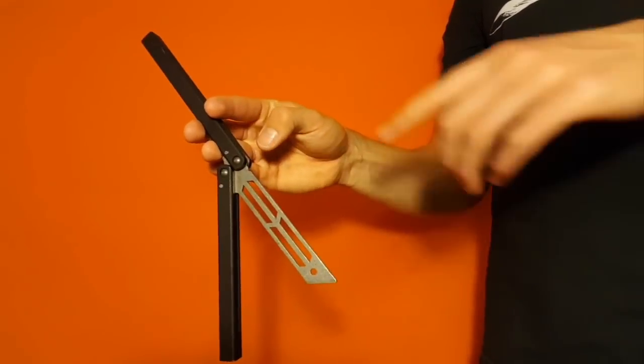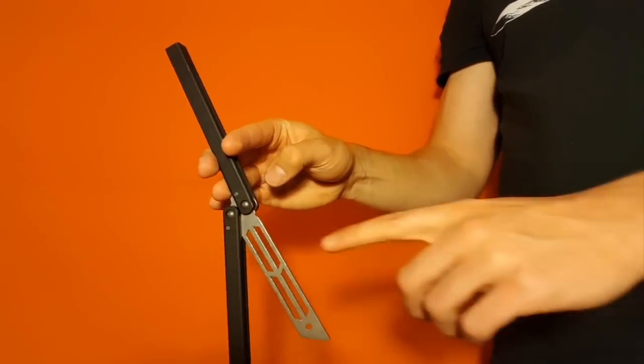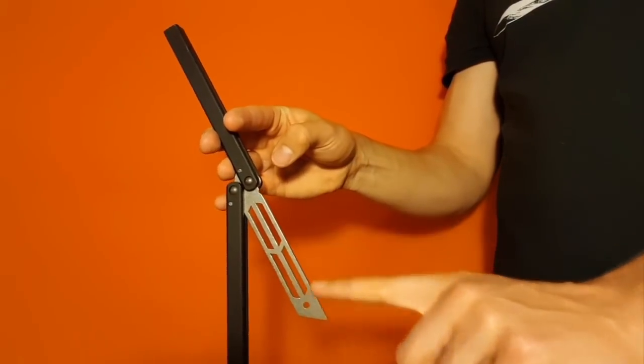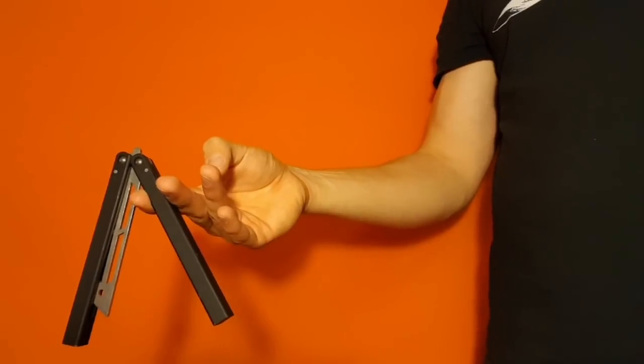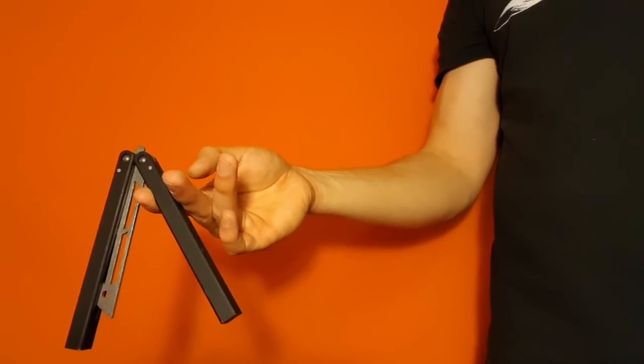At this point what you can do is you can take your index finger here and you want to take the back of this blade here, the dull side, and fling it over the top of your index finger like this.